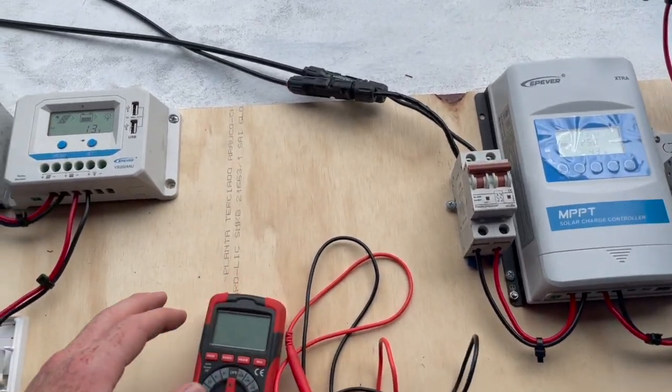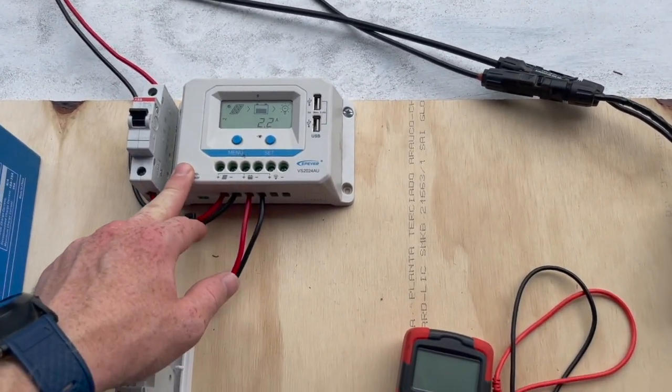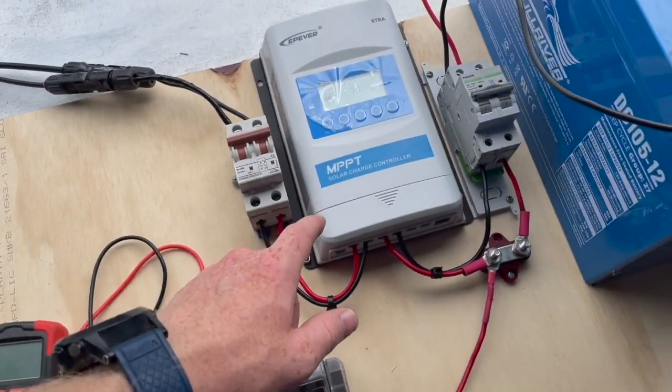To explain it briefly, PWM stands for Pulse Width Modulation. MPPT is Maximum Power Point Tracking.